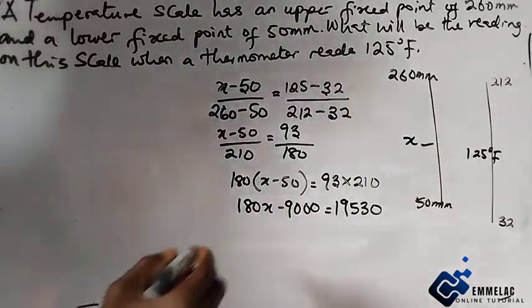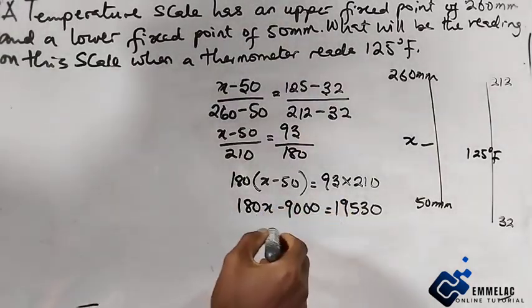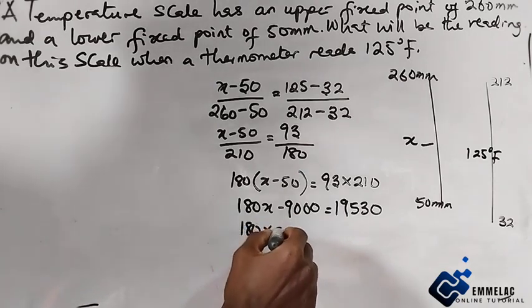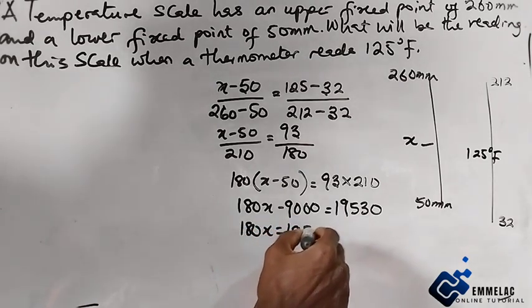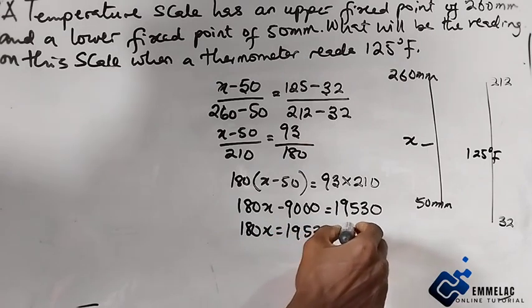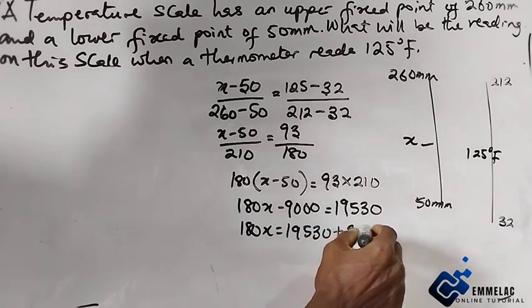Transposing 9000 to the right hand side, you have 180x equals 19530 plus 9000.